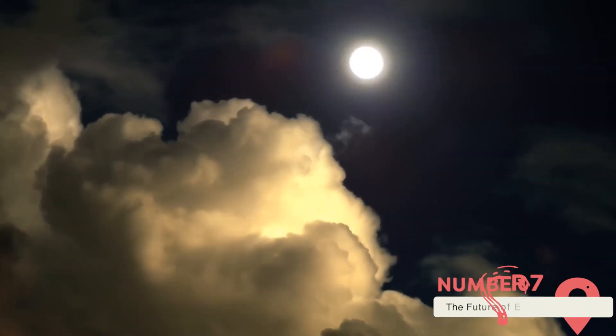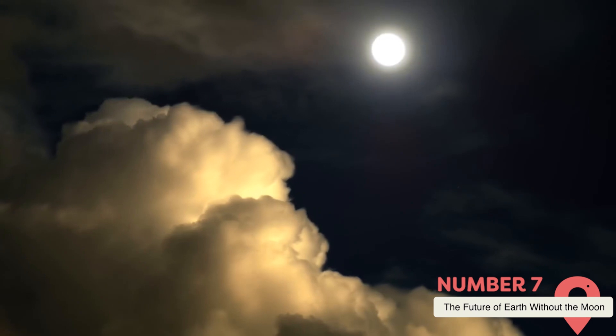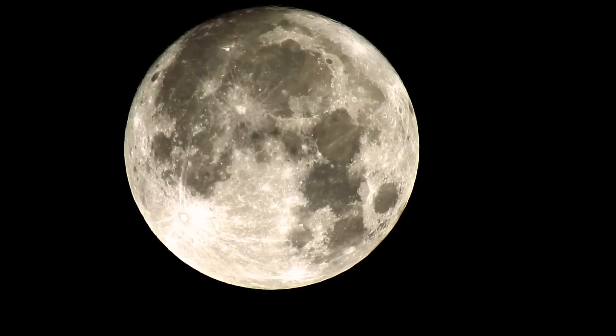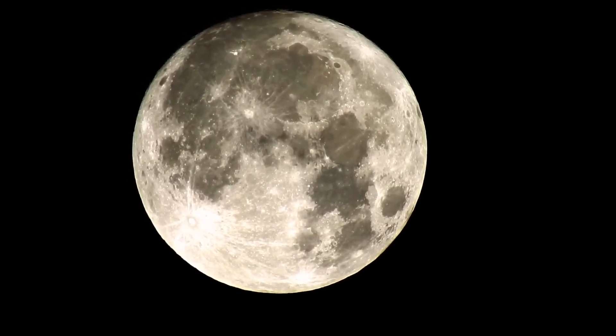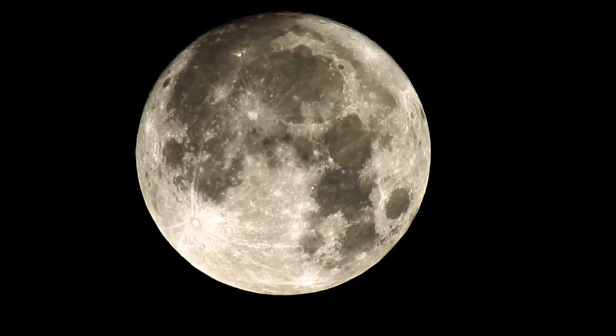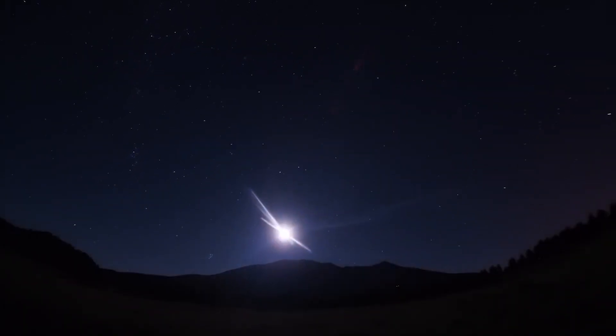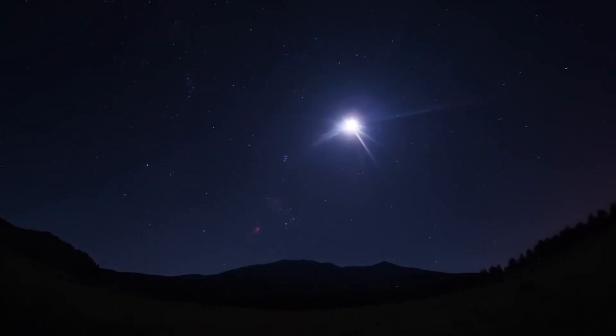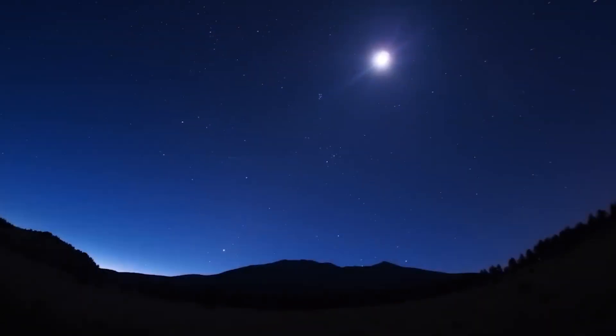The future of Earth without the Moon. While the complete loss of the Moon is not a realistic scenario in the foreseeable future, considering its effects helps us appreciate its importance. If the Moon were to suddenly disappear, or move significantly farther away, the consequences for Earth would be profound. Without the Moon's stabilizing influence, Earth's axial tilt could vary wildly, potentially causing extreme climate shifts. Seasons could become unpredictable, with some regions experiencing long periods of extreme heat or cold. This would have devastating effects on agriculture and ecosystems worldwide.